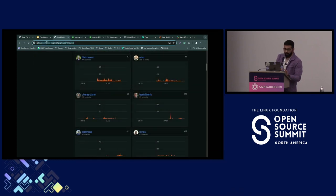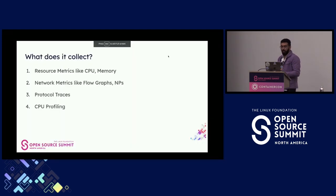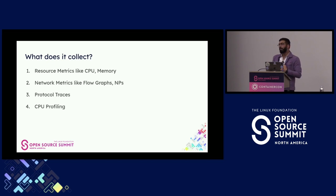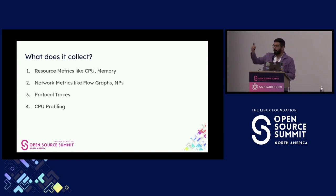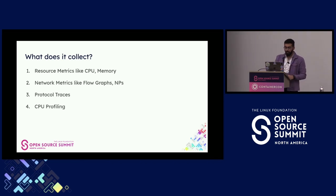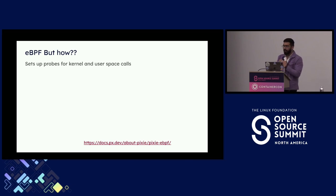What does Pixie collect? Resource metrics like CPU and memory, network metrics including flow graphs and network policy scanning, p50/p90/p99 latency, and CPU profiling. Using eBPF, they've tweaked it so profiling consumes less than 3% of CPU resources on the node. It also collects protocol traces.